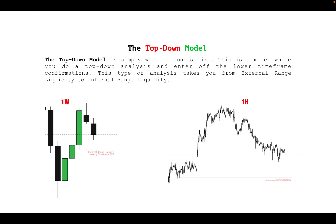This type of analysis takes you from external range liquidity to internal range liquidity. When you do a top-down analysis, you go from the monthly timeframe down to 15 minutes or 5 minutes. From the one-month timeframe to weekly, daily, and four-hour timeframes — that is the higher timeframe — any liquidity you spot there is the external range liquidity.